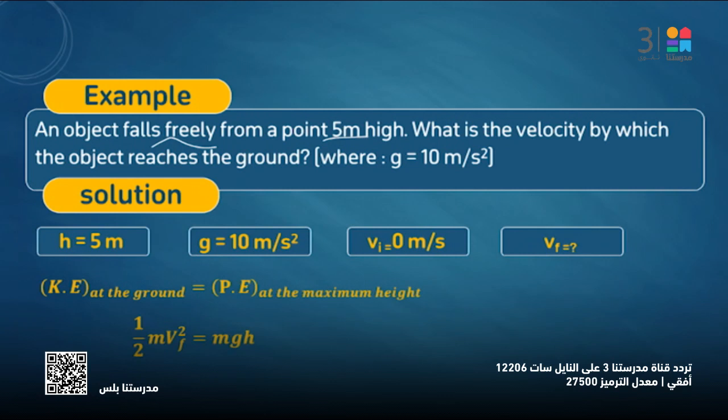Good. One-half m V final squared equals mgh. Someone might look at the problem and ask, where is the mass? We don't have mass. But the mass will cancel each other from this side to this side.